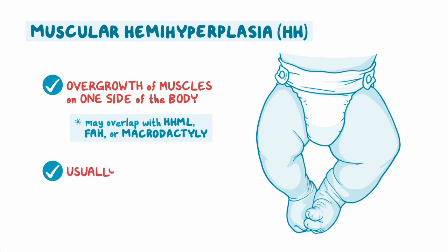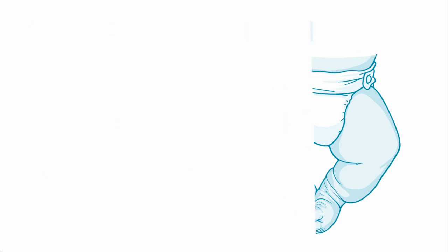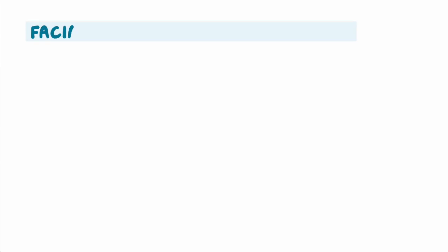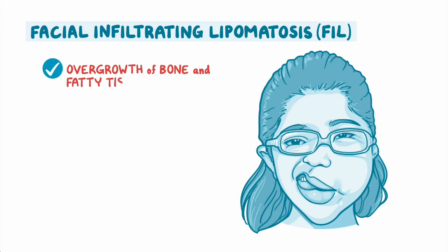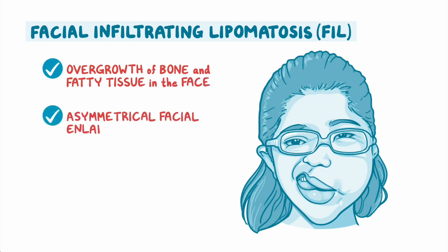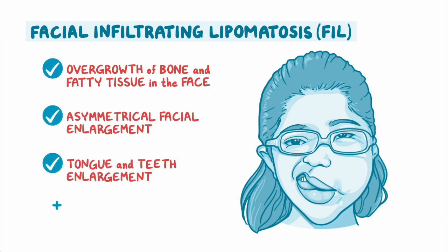HH is usually present at birth. Facial infiltrating lipomatosis, or FIL, leads to overgrowth of bone and fatty tissue in the face, causing asymmetrical facial enlargement, tongue and teeth enlargement, and rarely nerve tumors.